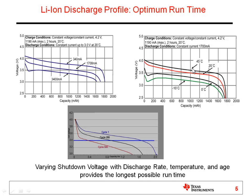The same thing happens if you use the same current but vary the temperature. A warm battery at 45 degrees or 20 degrees, you're going to still get about the same amount of capacity. But as it gets colder — at freezing for example — the voltage will drop much quicker. If your system can go all the way down to 2.5 volts you might get the same milliamp hours out of it, but most systems are going to stop at 3 or even 3.5 volts. So you can see the dramatic reduction in runtime at cold temperatures. The plot on the bottom shows how as the battery ages after many cycles, the internal impedance is also increasing, giving the same effect as a very cold battery, causing the voltage curve to drop very quickly. An aged battery can also give you a much reduced runtime. If your system shuts down at 3.4 volts, you're going to get a lot less runtime, whether it's an old battery, a cold battery, or a heavily loaded battery.